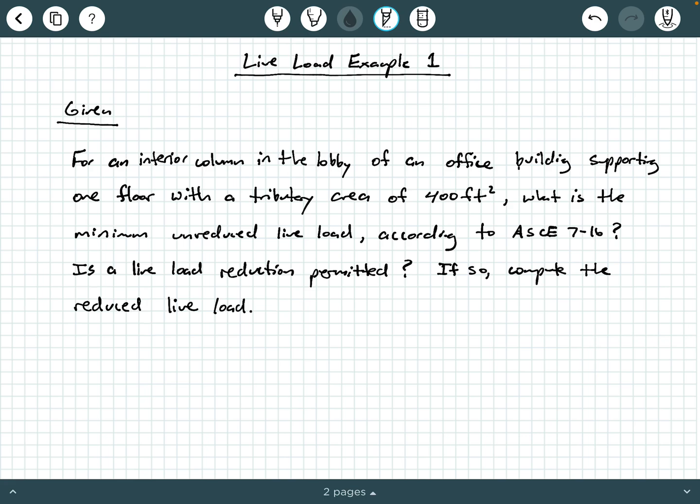In the given information, we are told the following. We have for an interior column in the lobby of an office building, supporting one floor with a tributary area of 400 square feet, what is the minimum unreduced live load according to ASCE 7-16? Followed by, is a live load reduction permitted? If so, compute the reduced live load.